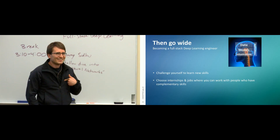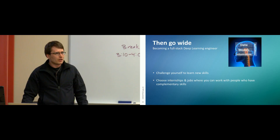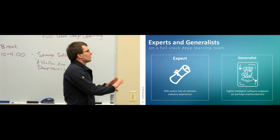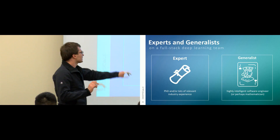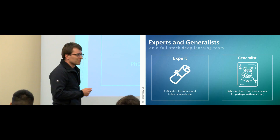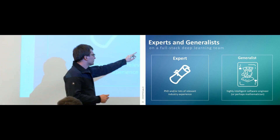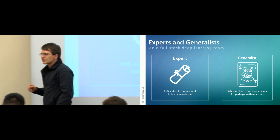At DeepScale, we think about engineers in two broad categories: experts and generalists. Experts are like someone with a PhD or lots of industrial experience — someone who's really dug in, done something significant, and can teach as well as do. Generalists are basically someone who has relevant skills, is very intelligent, and has proven themselves in software engineering or mathematics — the jack of all trades.